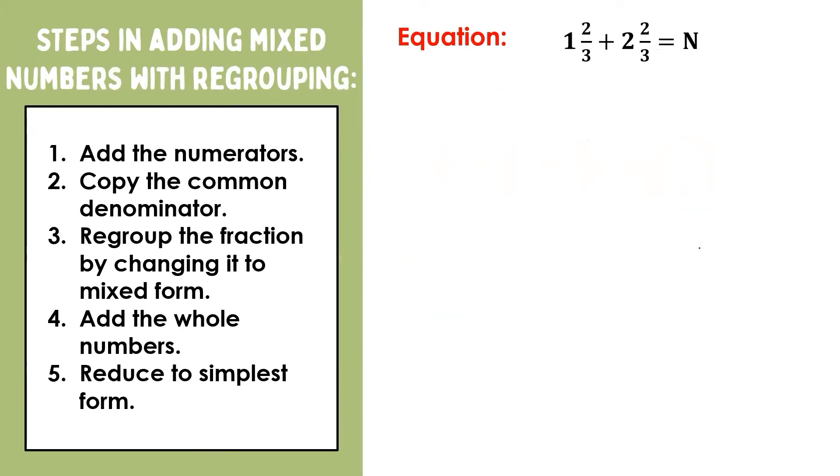Let's try another one. This time, we have one and two-thirds, and two and two-thirds. Since the given numbers have similar fractions, let us add first the numerators. Two plus two is four, then copy the common denominator, which is three. Four-thirds is an improper fraction, so we have to regroup it first.